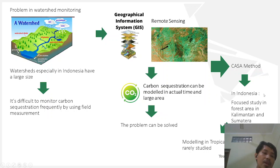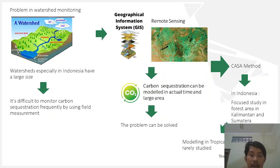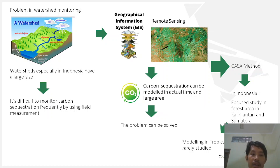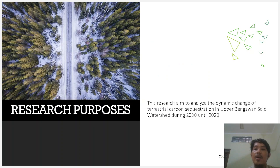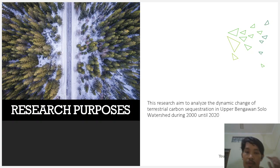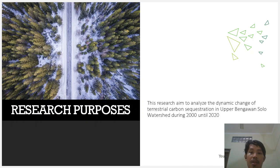In Indonesia, studies about carbon balance are still mostly discussing the potential of carbon storage in forest areas, especially in Kalimantan and Sumatra forests. Studies about carbon sequestration in watersheds are still rare. Therefore, this research focuses on the dynamic change of carbon sequestration in watershed areas, with the purpose of analyzing the dynamic change of terrestrial carbon sequestration in the upper Bengawan Solo watershed during 2000 to 2020.